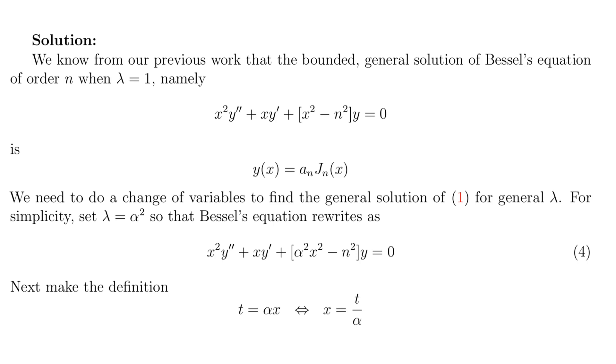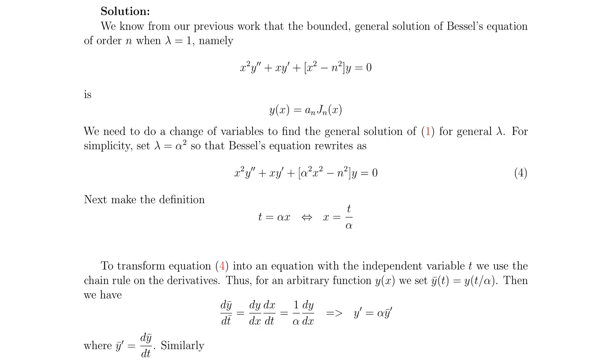Next, make the definition t equals alpha x, equivalently x equals t over alpha. To transform equation 4 into an equation with the independent variable t, we use the chain rule on the derivatives. Thus, for an arbitrary function y of x, we set y bar of t equal to the composition of y of x with the function x equals t over alpha.